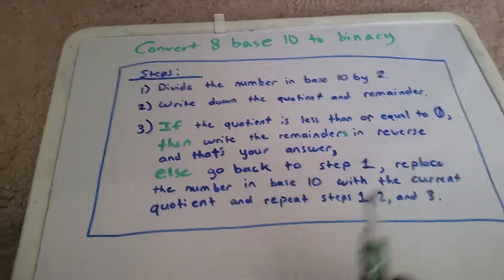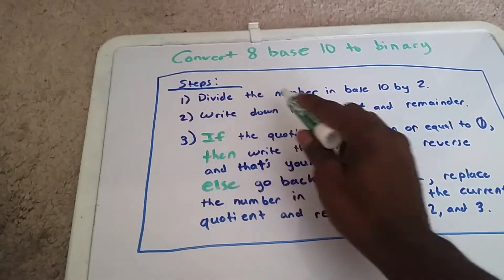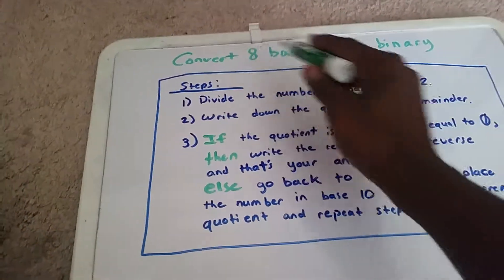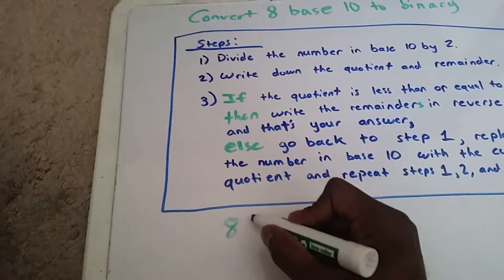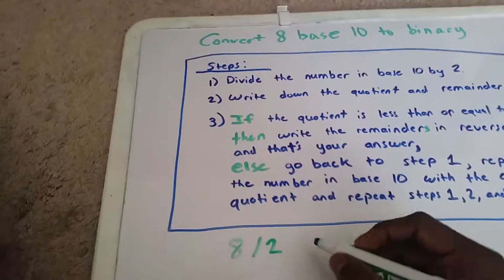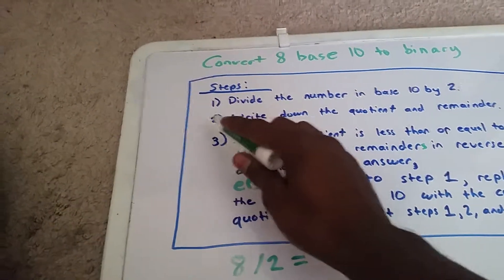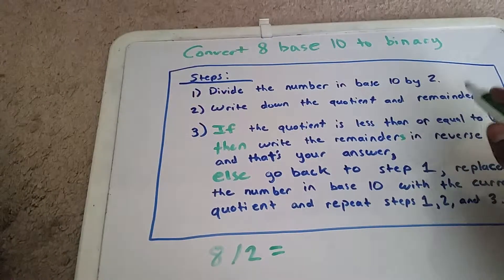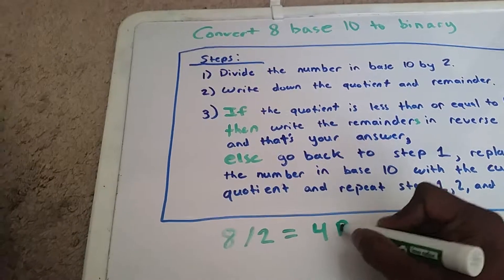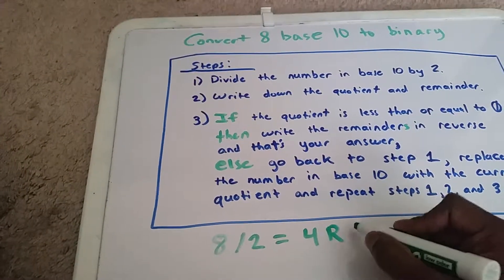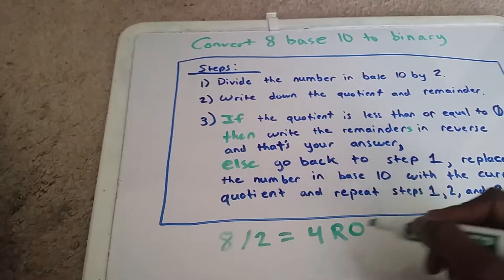Let's get started with this example. Step 1: we want to divide the number in base 10 by 2. Our number is 8, so that's 8 divided by 2. Step 2: we write down the quotient and the remainder. The quotient is 4, and the remainder — R for remainder — is 0 because it divides evenly.